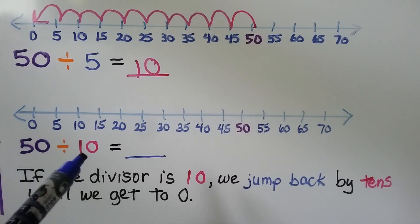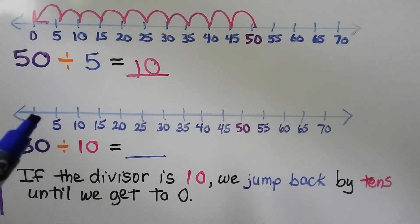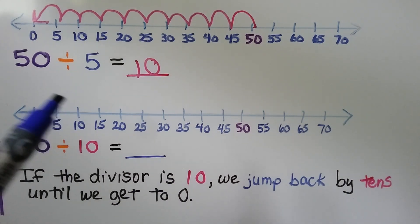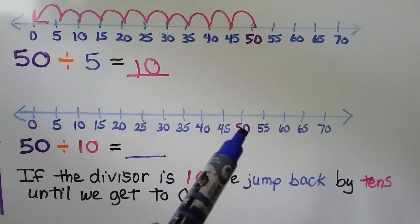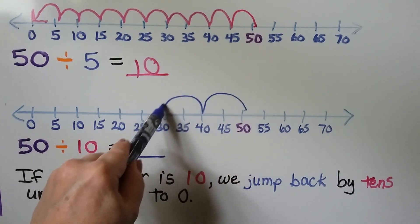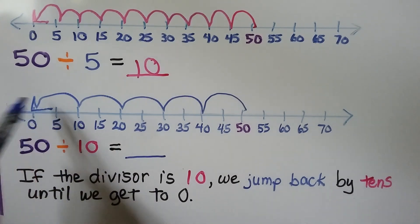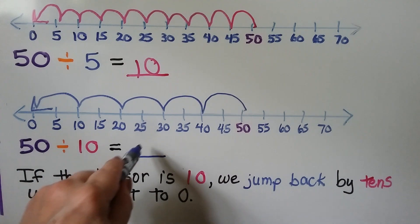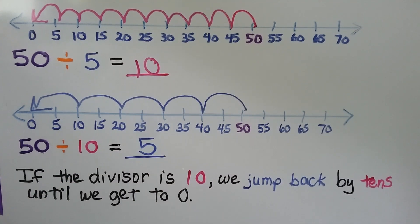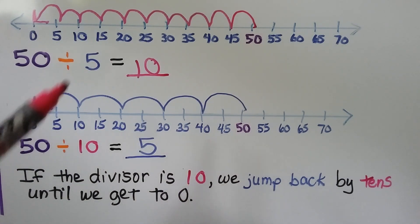Now watch what happens on the number line if we do 50 divided by 10. The scale is in increments of 5, so in order to jump 10 we need to jump 2 lines. We start at 50 and make jumps of 10: 1, 2, 3, 4, 5. So 50 divided by 10 is equal to 5. If the divisor is 10 we jump back by tens; if the divisor is 5 we jump back by fives until we get to 0.